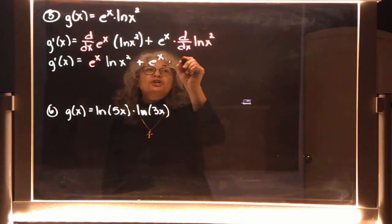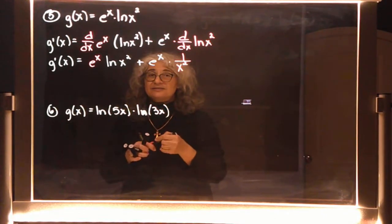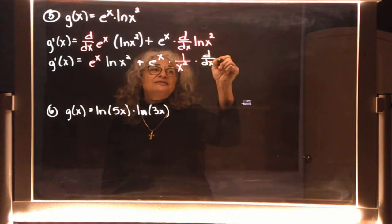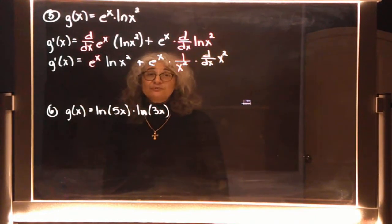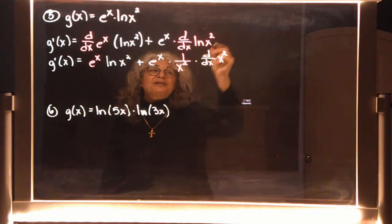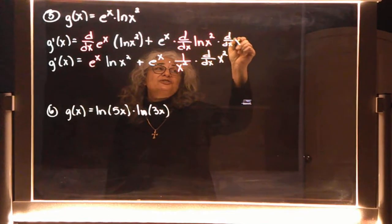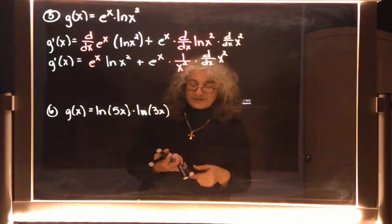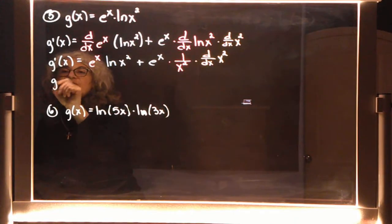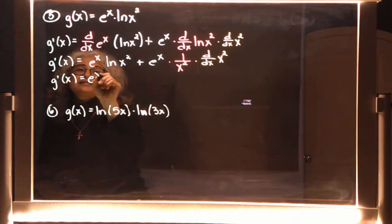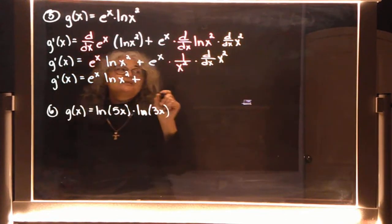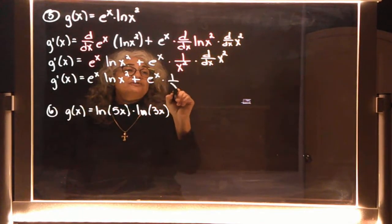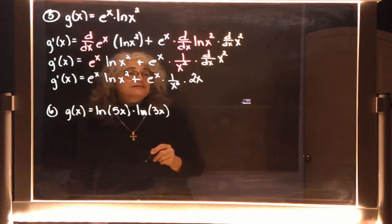You could write both derivatives that you need to take at the same step or on the second line — that choice is yours. So the derivative is e^x times ln(x²) plus e^x times 1 over x² times 2x.